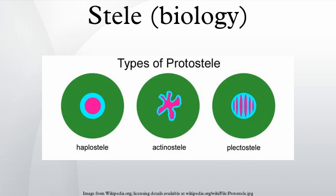Siphonostele: Siphonosteels have a region of ground tissue called the pith internal to the xylem. The vascular strand comprises a cylinder surrounding the pith. Siphonosteels often have interruptions in the vascular strand where leaves originate. Siphonosteels can be ectophloic, or they can be amphiphloic, with phloem both external and internal to the xylem. Among living plants, many ferns and some archaic flowering plants have an amphiphloic stele. An amphiphloic siphonosteel can be called a solenosteel if the cylinder of vascular tissue contains no more than one leaf gap in any transverse section.